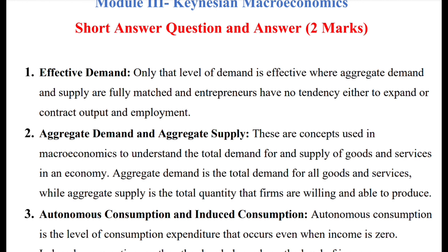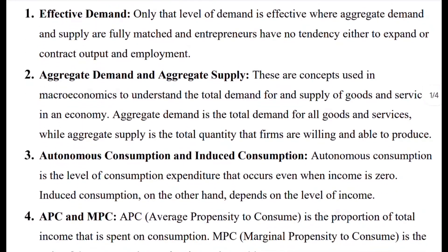Only that level of demand is effective where the supply is fully managed, and the entrepreneurs have no tendency either to expand or contract the output and employment. Effective demand is equal to the point where aggregate demand and aggregate supply are equal, and output and employment have no tendency to expand.